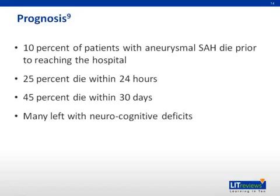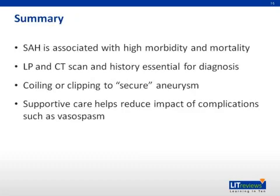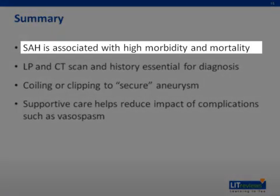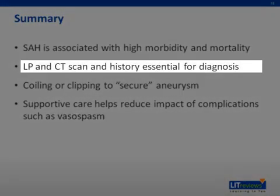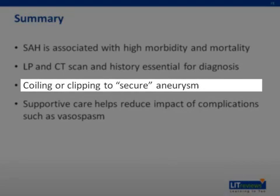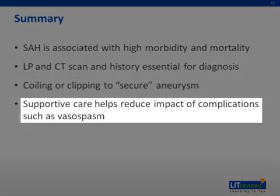Neurocognitive symptoms such as fatigue, mood disturbances, and other related symptoms are common sequelae. Even in those who have made good neurological recovery, anxiety, depression, and post-traumatic stress disorder, as well as cognitive impairment, are common. 46% of people who have suffered a subarachnoid hemorrhage have cognitive impairment that affects the quality of their life. Over 60% report frequent headaches. Summary: subarachnoid hemorrhage is associated with high morbidity and mortality. Lumbar puncture and CT scan, as well as history, are essential for diagnosis. Coiling or clipping to secure an aneurysm is the definitive treatment. Supportive care helps reduce the impact of complications, such as vasospasm.